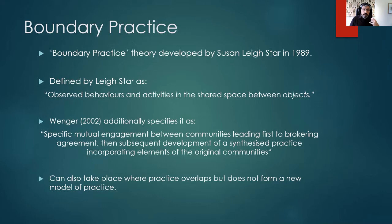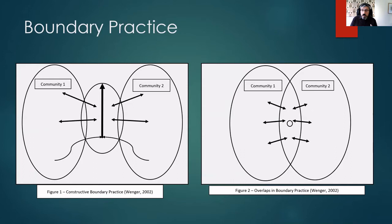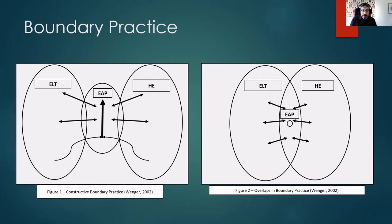This boundary practice can also take place where practice overlaps but doesn't form a new model of practice. To show this in pictorial form, on the left hand side you have the example of constructive boundary practice, where two different communities act together and a new community is formed, which incorporates synthesized models of practice from both original communities. You can also have boundary practice where two overlapping communities produce boundary practice in the middle. For our purposes, the two original communities are ELT and HE.